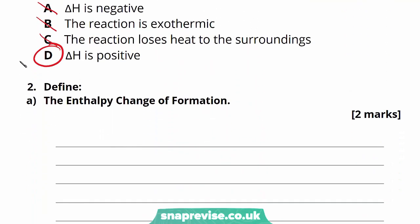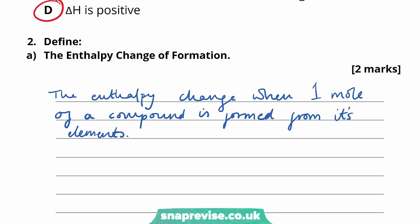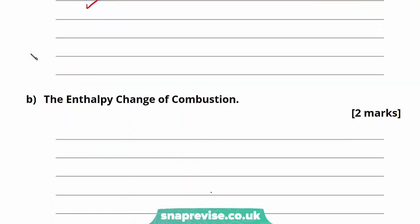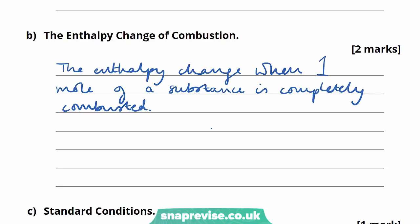Part A asks us to define the enthalpy change of formation. The enthalpy change of formation is the enthalpy change when one mole of a compound is formed from its constituent elements under standard conditions. This question is worth two marks: one for stating that one mole is formed, and one for stating it's the compound formed from its elements. Part B asks to define the enthalpy change of combustion: the enthalpy change when one mole of a substance is completely combusted — one mark for one mole, one for completely combusted.